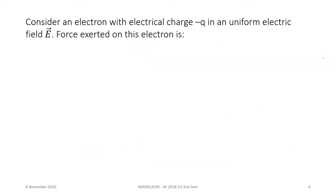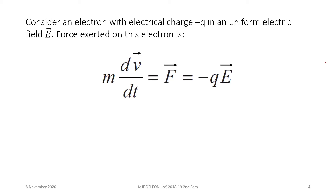We can consider an electron with electrical charge negative Q in a uniform external electric field E. The force exerted on this electron will be F = -QE. We know that force is also equal to mass times acceleration, or mass times dv/dt — the change in velocity with respect to time. This implies that the acceleration of the electron is constant and the velocity will increase with time. But in reality, collision events will prevent the indefinite increase of velocity, since electrons constantly change direction when they collide with scattering centers.